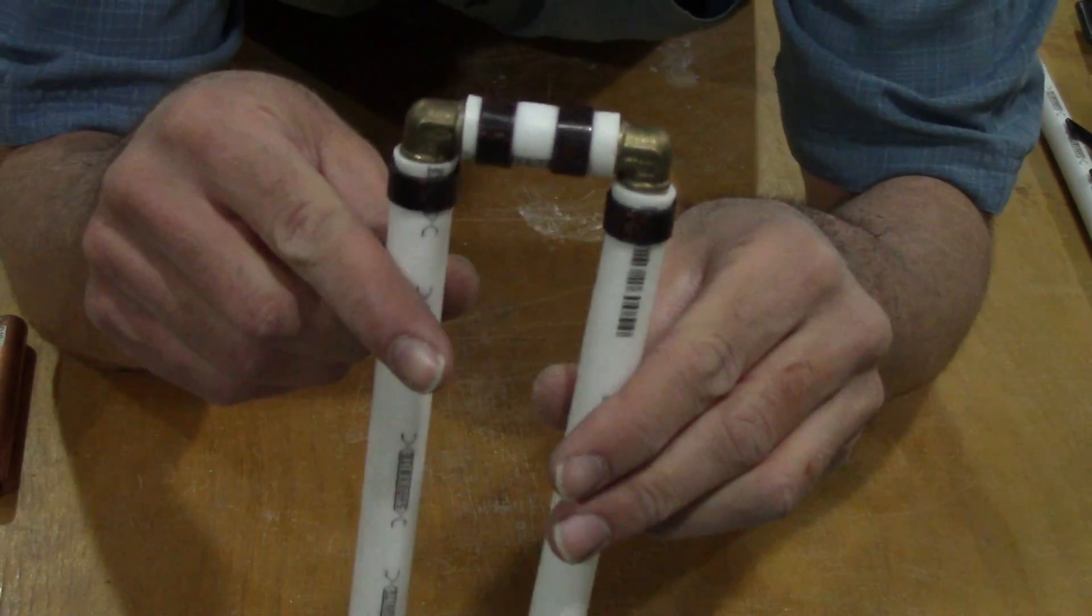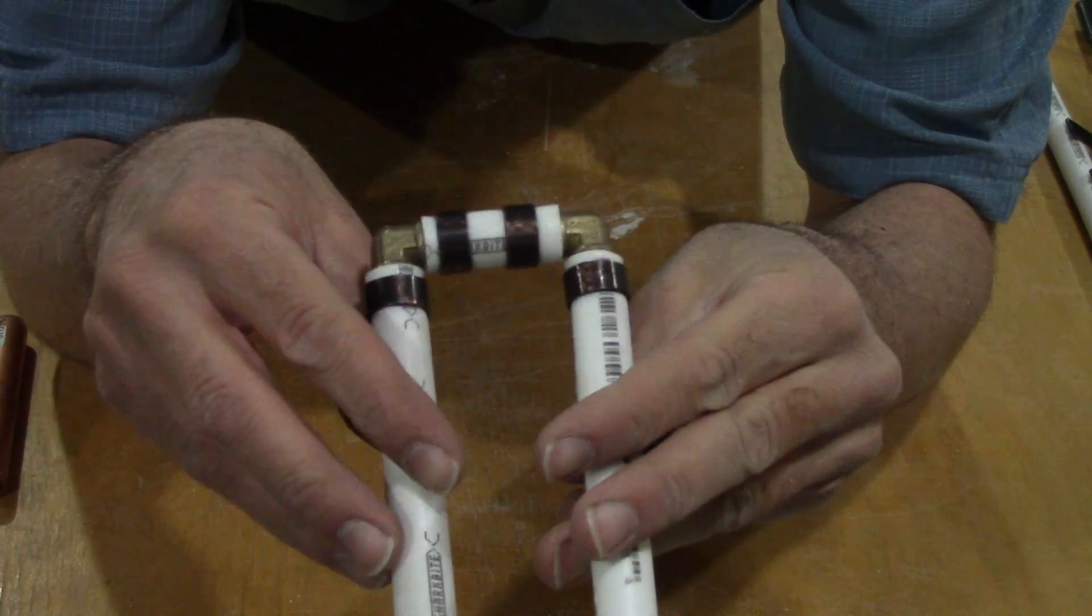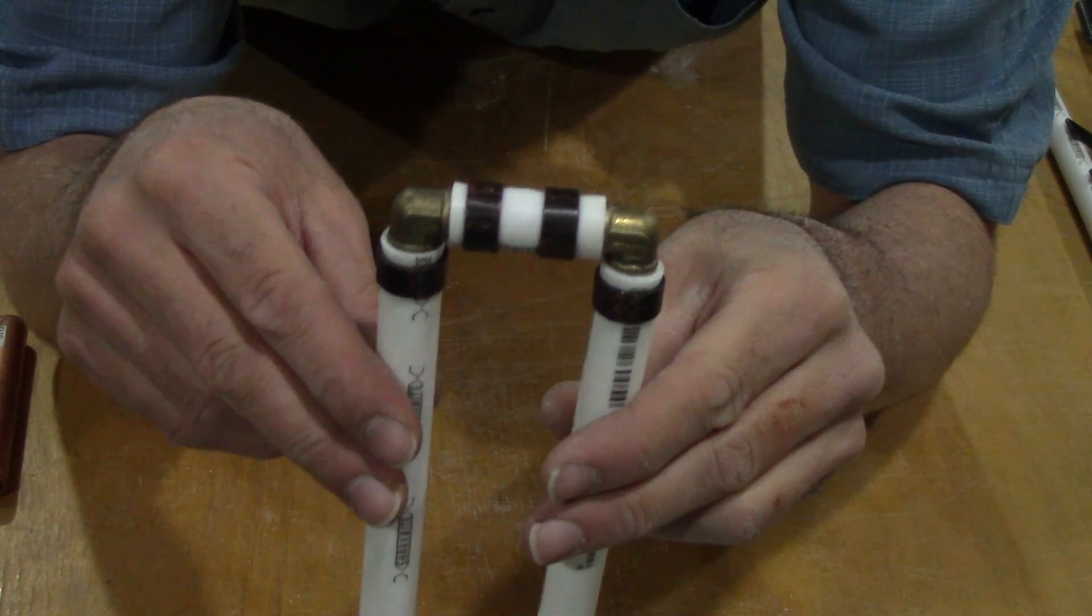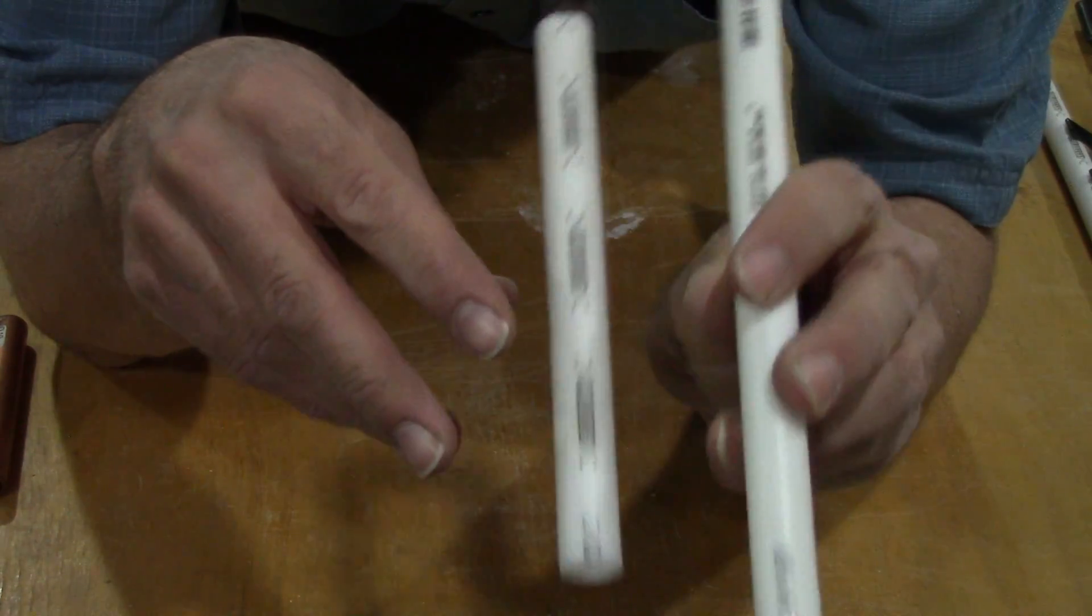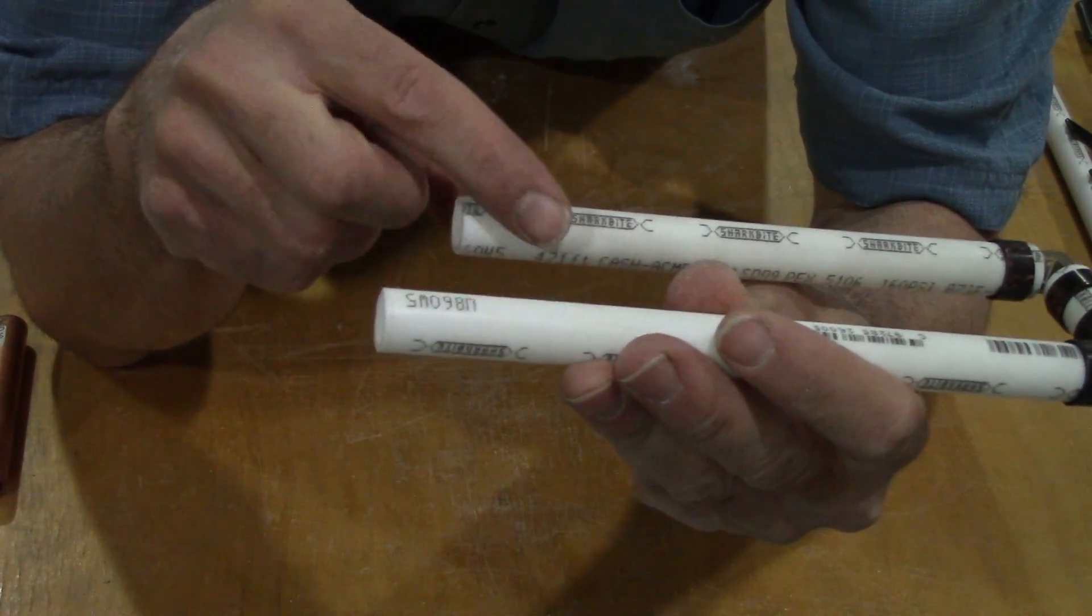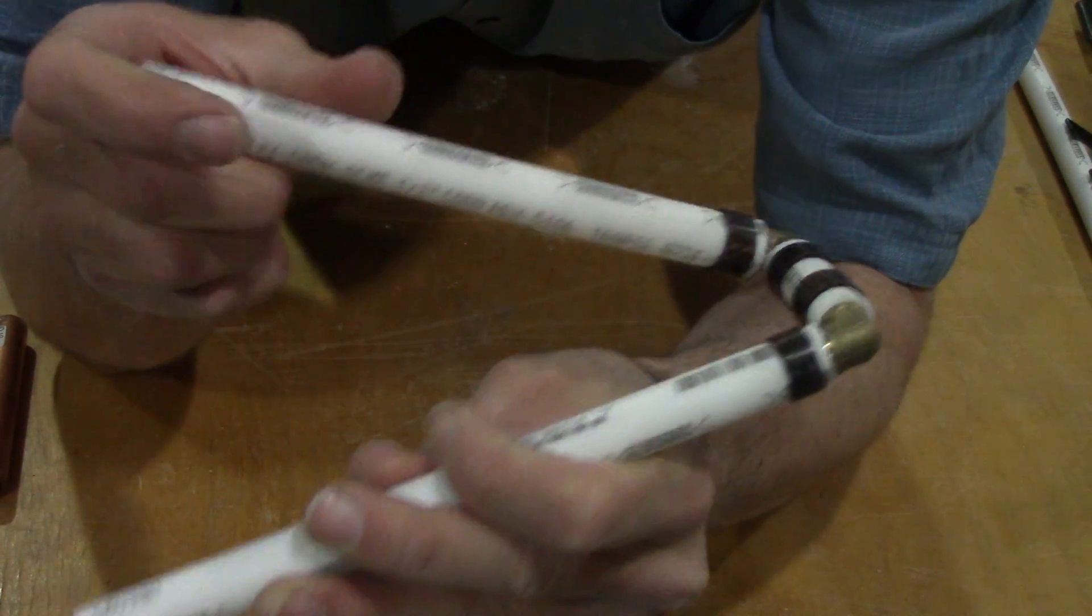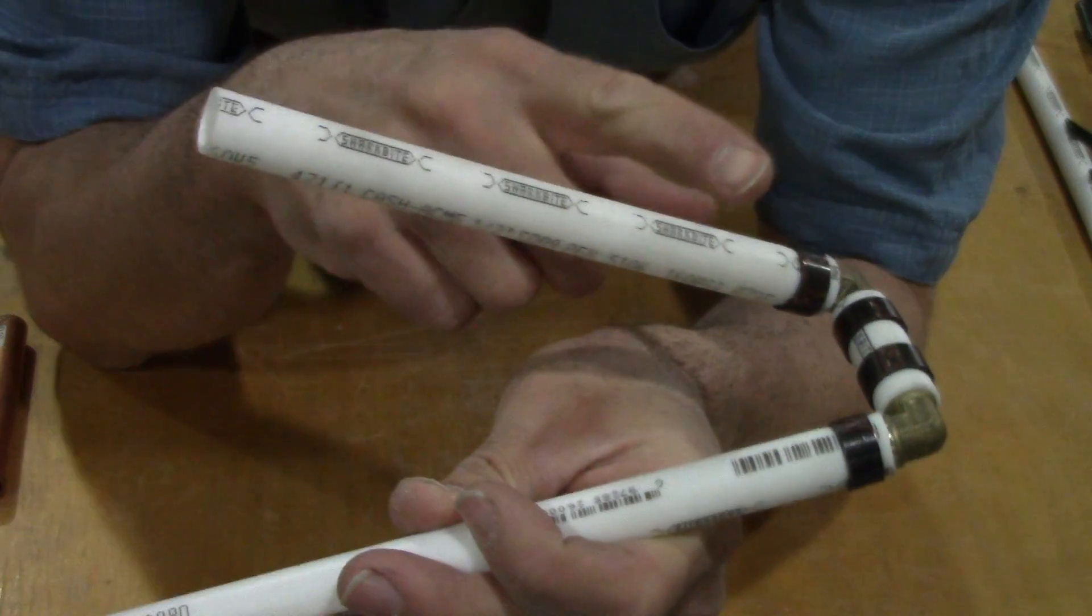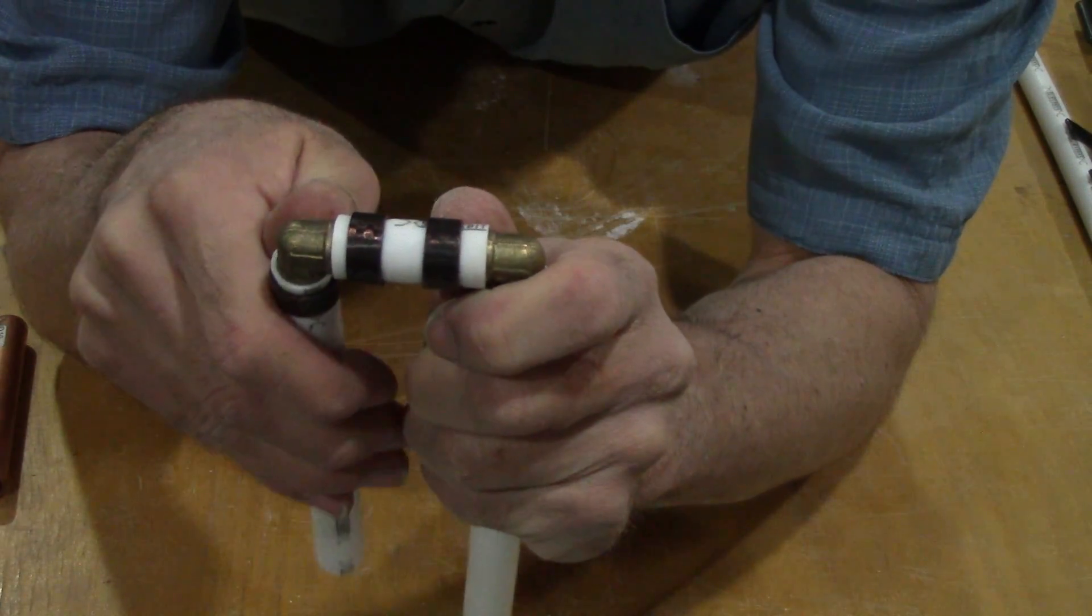Another thing I love about using PEX versus copper, it's really quick, super forgiving. Let's say you have a connection like this somewhere in your house, but this line needs to move. You can just tweak it like that and it's not going to leak. You could never do that with copper, so it's a little forgiving.